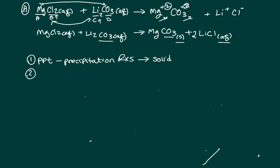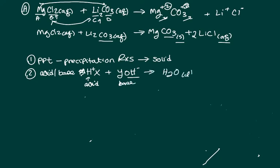The second kind of reaction is the acid-base reaction. An acid has H⁺ in it, reacting with a base that has hydroxide. For acid-base reactions, you will always end up with liquid water and a salt of some sort. This is not an acid-base reaction because we don't have an acid, we don't have a base, and we don't end up with water and salt.